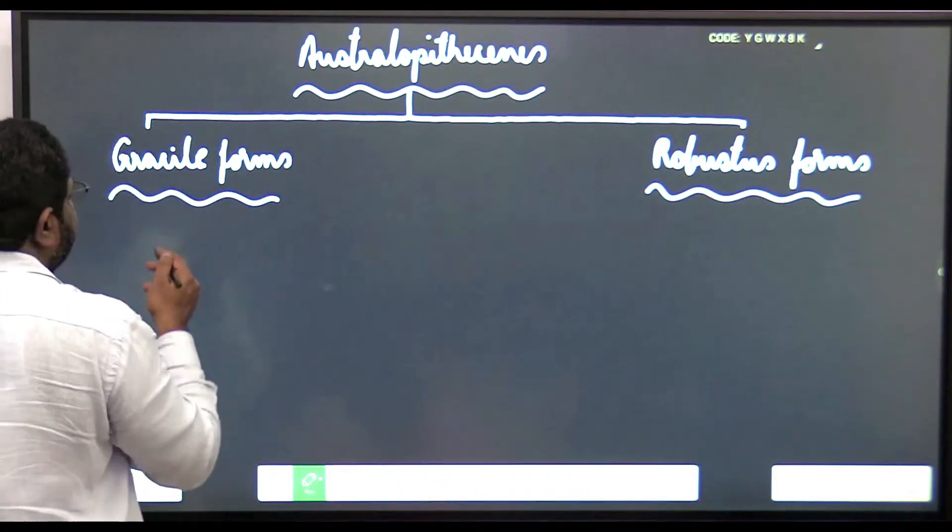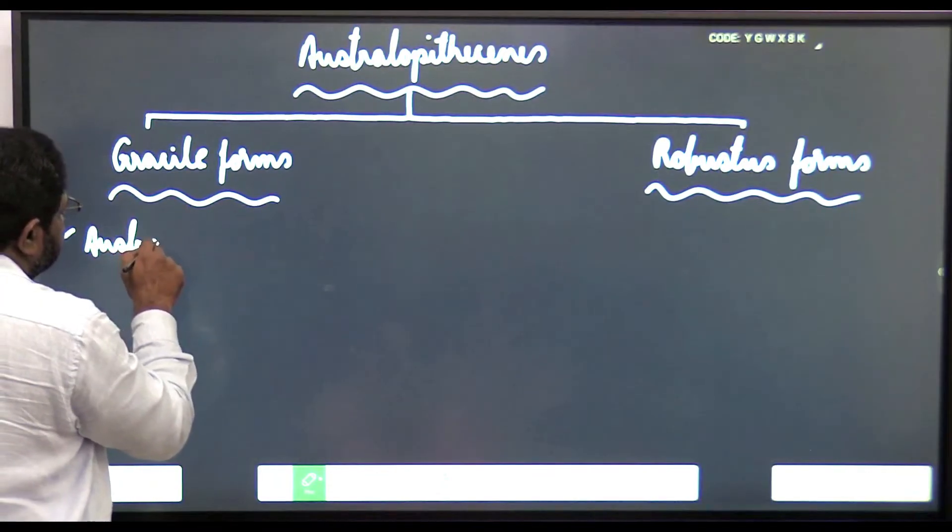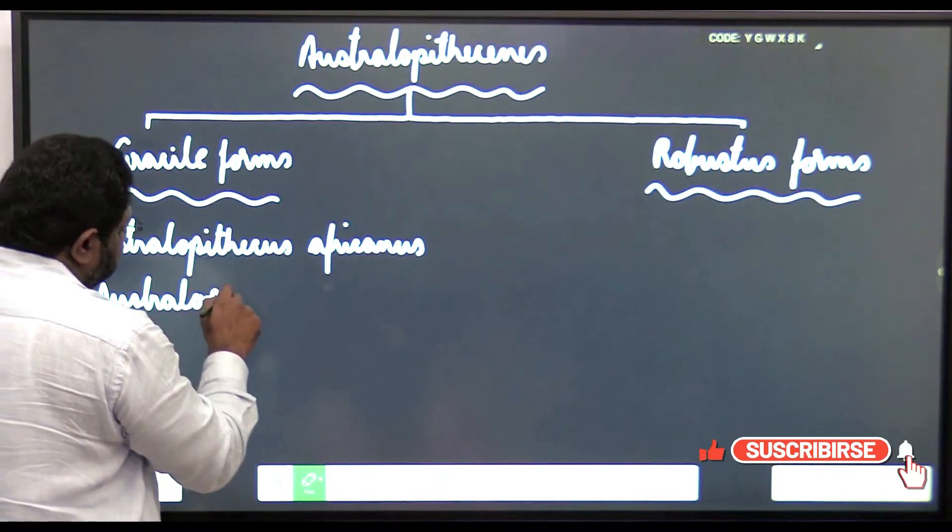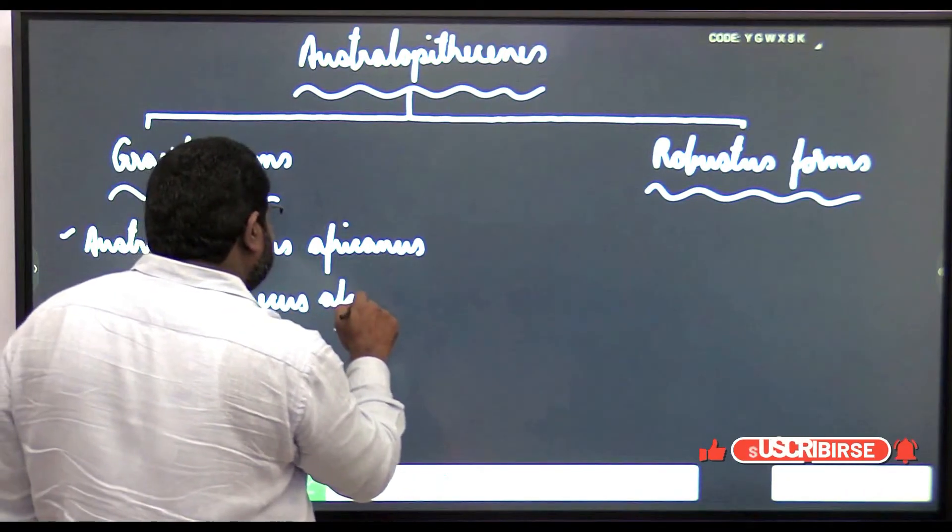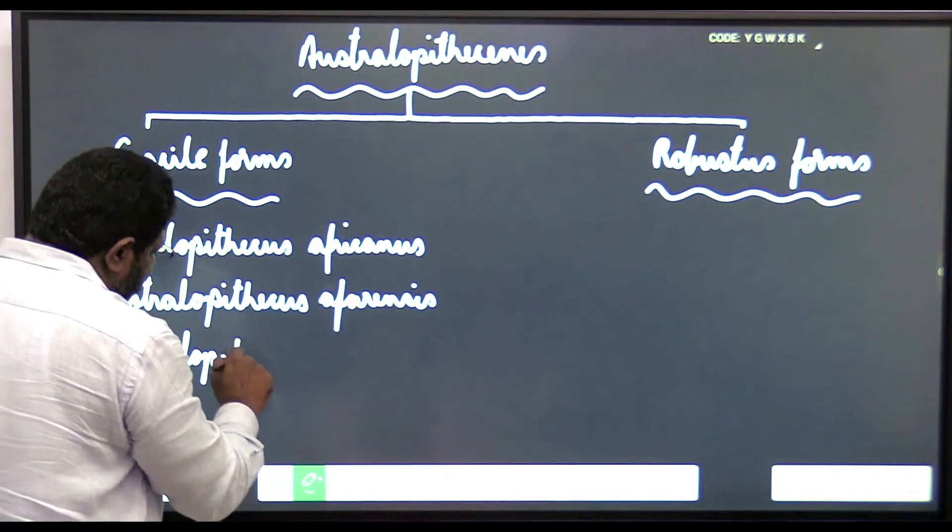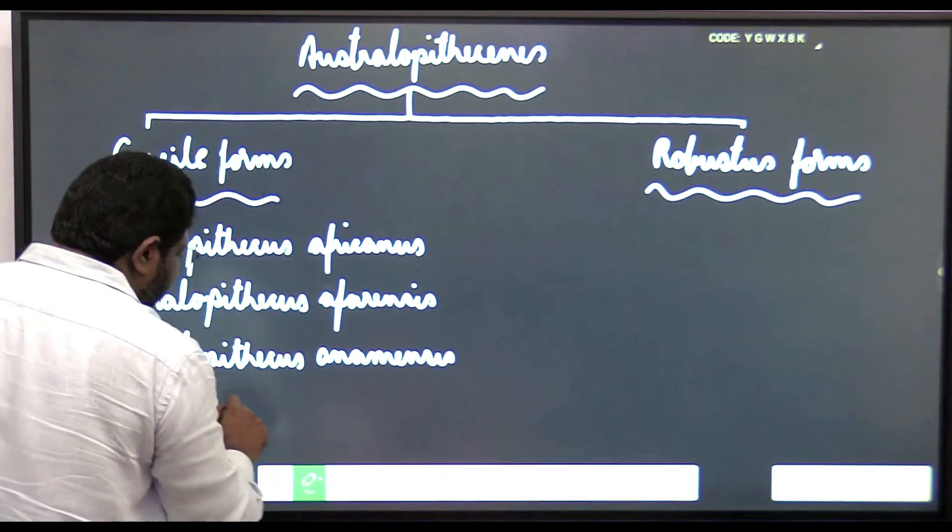The gracile forms include Australopithecus africanus, Australopithecus afarensis, Australopithecus anamensis, and Australopithecus ramidus.